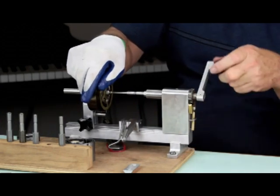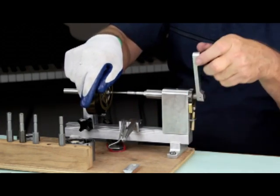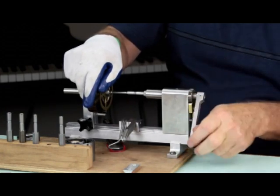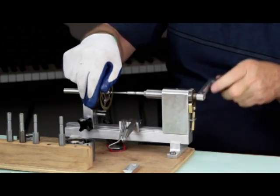Wind the mainspring all the way so the center of the spring closes tightly around the winding arbor. This will secure the spring around the spring hook so it won't come loose.